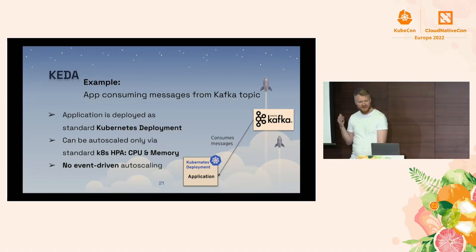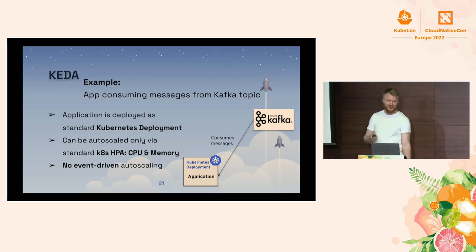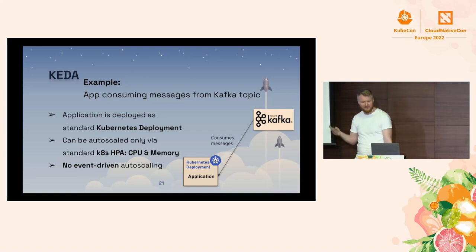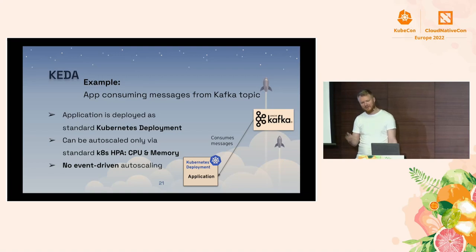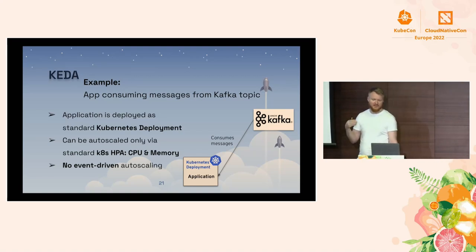To describe the idea with a specific example: this is a very simple example application that consumes messages from some external systems. In this case, it's a Kafka consumer application that consumes messages from a Kafka topic. We have this application deployed on our cluster and we'd like to autoscale it. If we use default Kubernetes tools, we'd use HPA, but the problem with HPA is that it can only scale based on CPU or memory. For event-driven applications, this may not be the best fit because CPU or memory consumption may not correlate with actual scaling needs — you'd want to scale based on unprocessed messages in the Kafka topic.